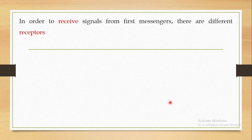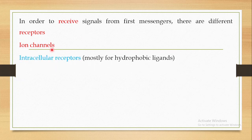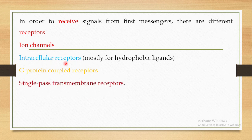There are different kinds of receptors to receive signals from the first messengers. One important type of receptor found on the cell surface is ion channels. You also have intracellular receptors, which are mostly for hydrophobic signals. There are also G protein-coupled receptors and single-pass transmembrane receptors. So there is a variety of extracellular signals and a variety of receptors. The intracellular receptors are for hydrophobic ligands and are present inside the cell, not on its surface.